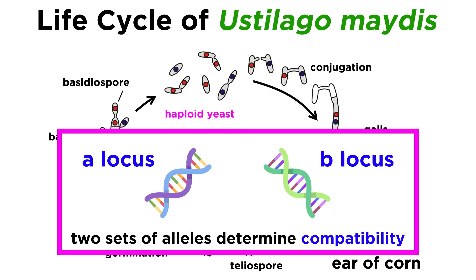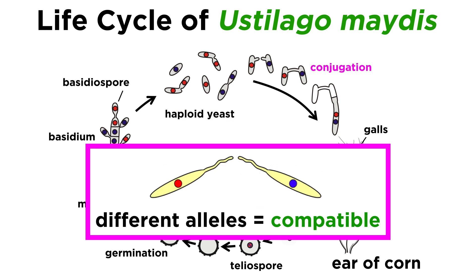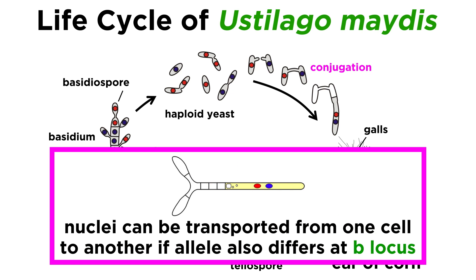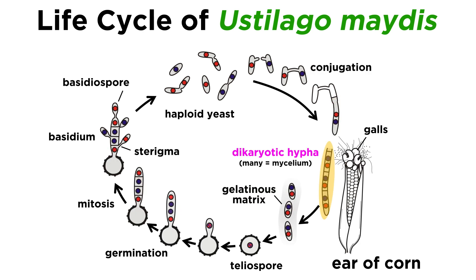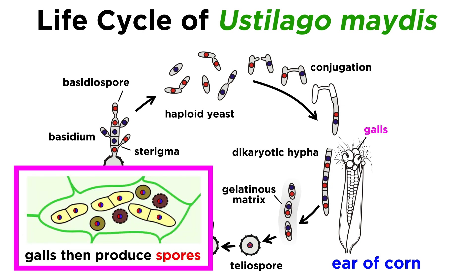Starting at the yeast phase, the cells have two genetic alleles that determine if another yeast cell is a compatible mate: the A locus and B locus. If the two yeasts have different alleles at the A locus, conjugation tubes form on the cells and grow toward each other, fusing at the conjugation tube tips. This connection will allow the cells' respective nuclei to be transported from one to the other. However, this is conditional upon the B locus. If the B locus differs from one cell to the other, the conjugation tubes will transport the nuclei and form a dicaryotic cell, which can grow into a filamentous dicaryotic mycelium. This dicaryotic mycelium will insert itself into the plant tissue and form galls that release the spores.